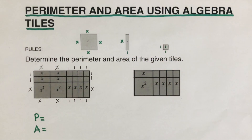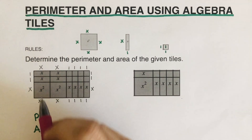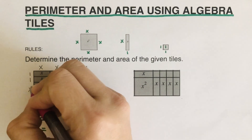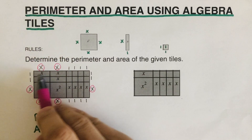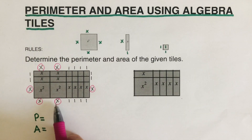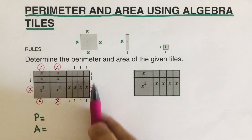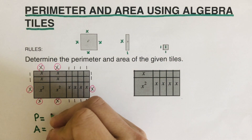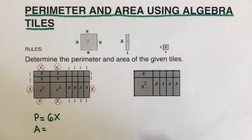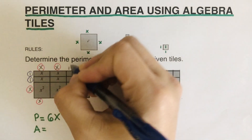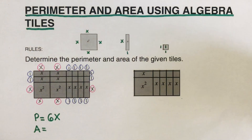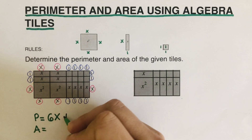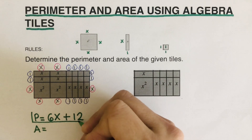To find the perimeter we combine like terms. First, count all the x's — that's one, two, three, four, five, six — so six x's. Then count all the ones: one, two, three, four, five, six, seven, eight, nine, ten, eleven, twelve. So the perimeter of this figure can be represented as 6x + 12.